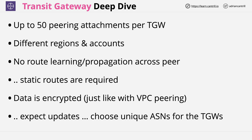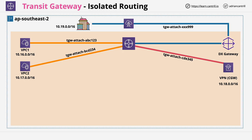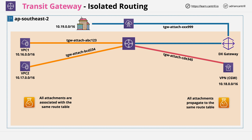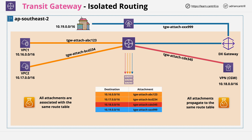Next, I want to cover how Transit Gateways can be used for more advanced routing architectures. In the default mode, you have one route table, and all attachments are associated with the same route table — meaning when traffic leaves an attachment, that route table decides where it goes. All attachments also propagate to this single route table, making all attachments aware of each other. In this example, the route table ends up containing each of the CIDR ranges — 10.16, 10.17, 10.18, and 10.19 — with their corresponding attachment objects as targets.